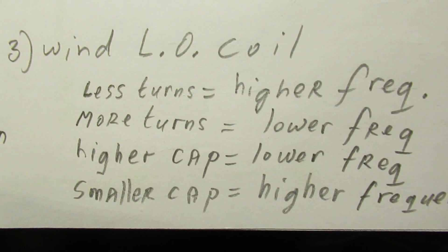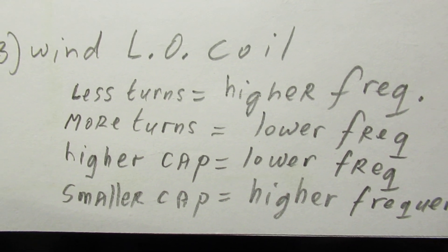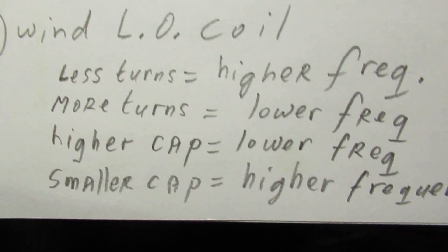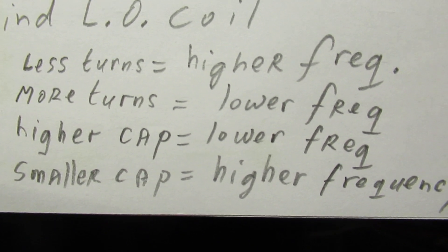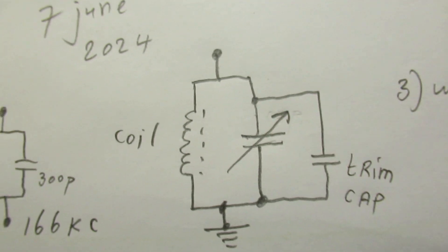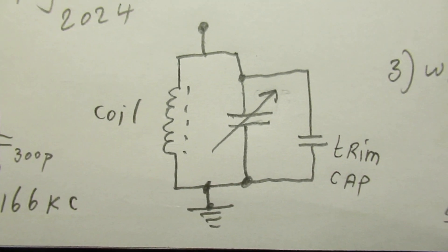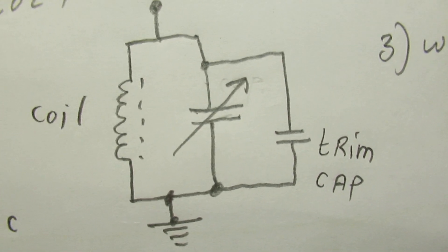Less turns on the local oscillator coil means a higher frequency. More turns a lower frequency. A higher capacitor, parallel capacitor, a lower frequency. And this is, in fact, this is the tuning cap. This is the tuning cap of 100 to 600 picofarad. And that's the trimmer cap.